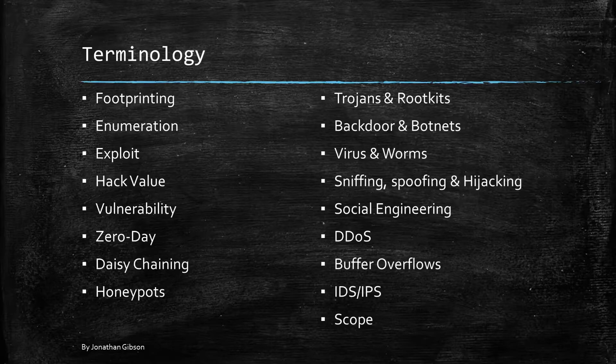A backdoor is an undocumented method of gaining access to a program or a computer by using another installed program or a rootkit that bypasses normal authentication. The backdoor is generally written by a programmer who created the original program and is often only known to that person. But nowadays, backdooring code is a major flaw, and hackers around the world are consistently checking to see if programs or databases have backdoors.